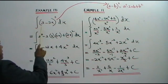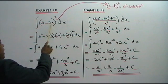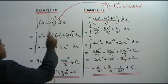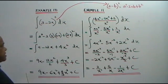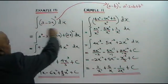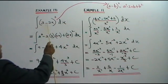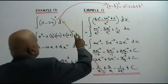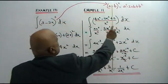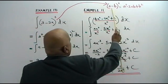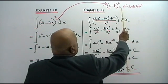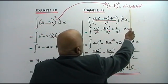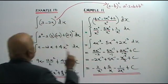Integrate (3 minus 2x) squared with respect to x. We write it like this: (3 minus 2x) squared. We use the identity (a minus b) squared, which is equal to a squared minus 2ab plus b squared.